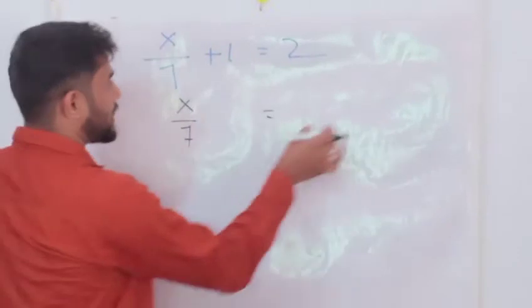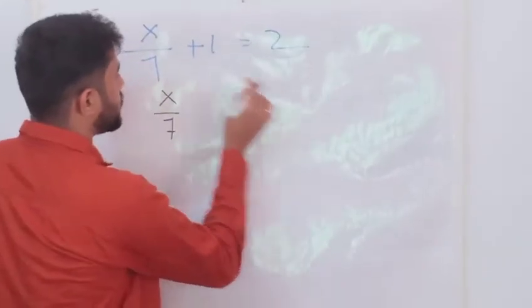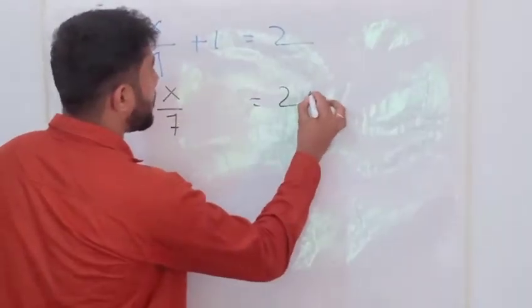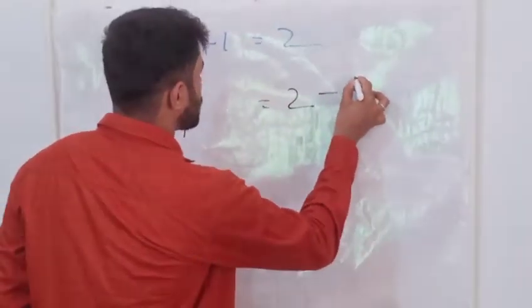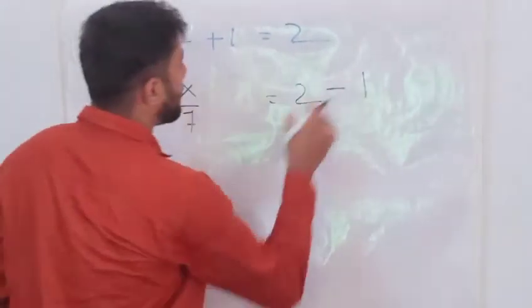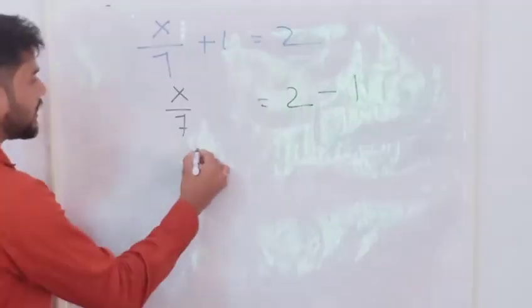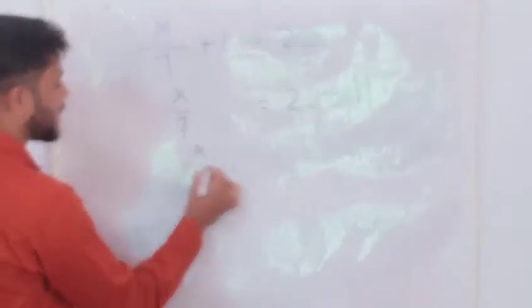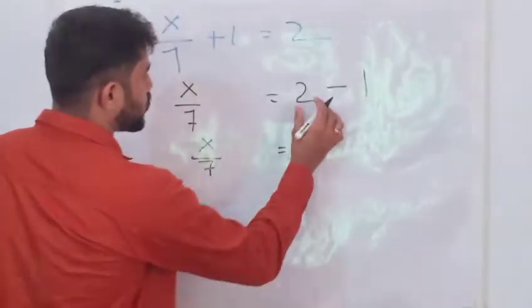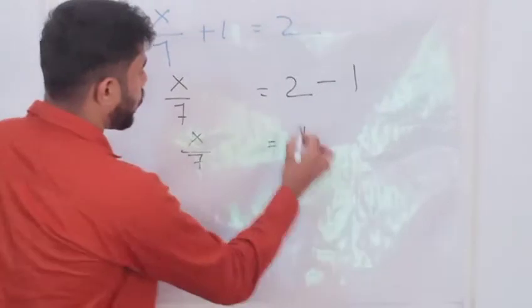From left hand side to right hand side, if it is going, plus 1 becomes minus 1. This plus 1 became minus 1. Then X by 7, which is equal to 2 minus 1.